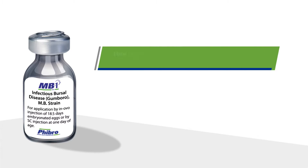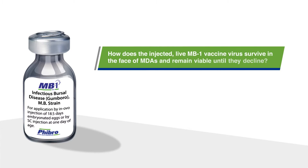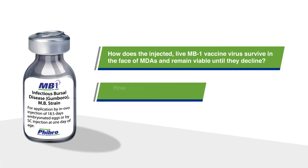How does the injected live MB1 vaccine virus survive in the face of MDAs and remain viable until they decline? In addition, how does it confer individual chick onset of immunity?